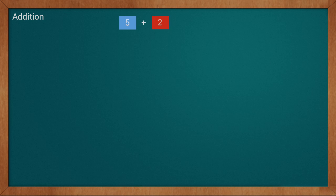We have seen addition and subtraction problems and solved them using a number line. Now to understand the difference between addition and subtraction, we will take the same examples and solve them with the help of a number line. First we will take the example of addition. Our problem is 5 plus 2 equals 7. We will draw it on the number line.